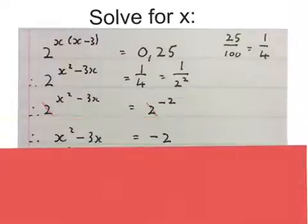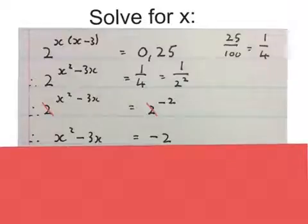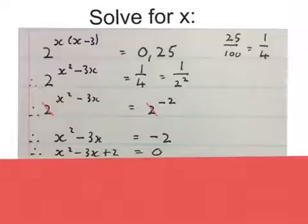Now the bases are the same. We drop the bases. We get x squared minus 3x equals to minus 2. This now becomes a quadratic equation. If you have an equal with an x squared in it, you take everything to one side where the x squared is positive.